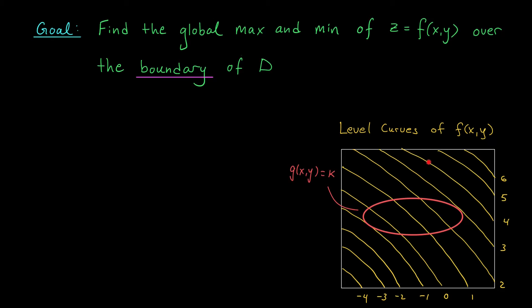The level curves tell us all points where our function attains a particular value. So for example, this would be the level curve where my function attains a height of 6. Do I have any points along the boundary where my function attains a height of 6? No, you can see there's no intersection between this level curve and our elliptical boundary.